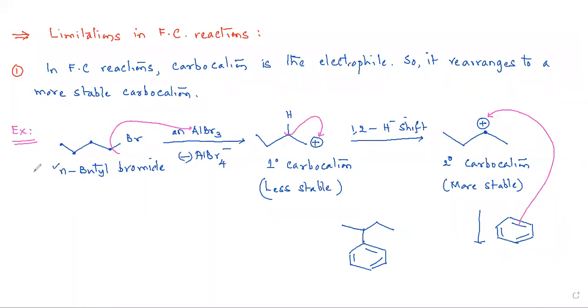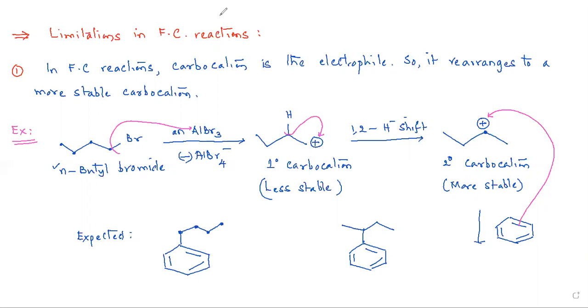Because we started with n-butyl bromide, we would expect n-butylbenzene as the product — a straight four-carbon chain attached to benzene. But instead we got secondary butylbenzene. That is the interesting and important part of this limitation.